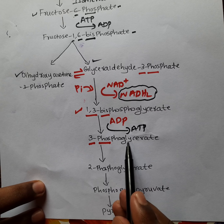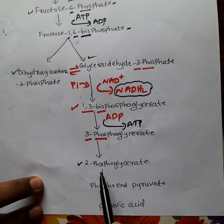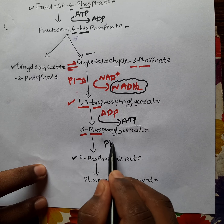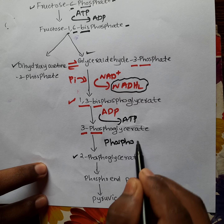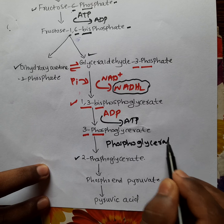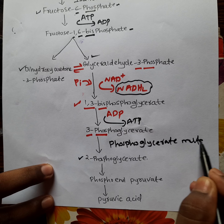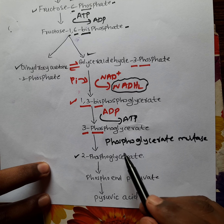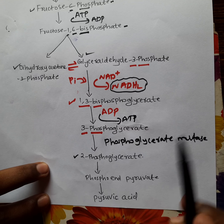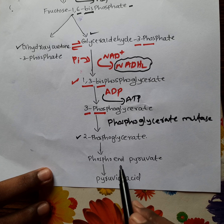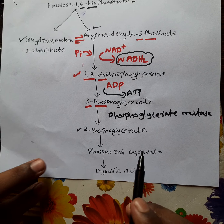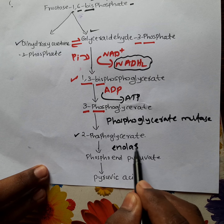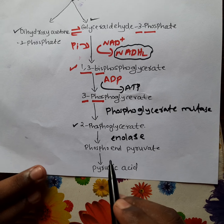Next, 3-phosphoglycerate converts into 2-phosphoglycerate in the presence of the enzyme phosphoglycerate mutase. After that, 2-phosphoglycerate converts into phosphoenolpyruvate (PEP) in the presence of the enzyme enolase. So we have now discussed four enzymes: hexokinase, isomerase, phosphoglycerate mutase, and enolase.